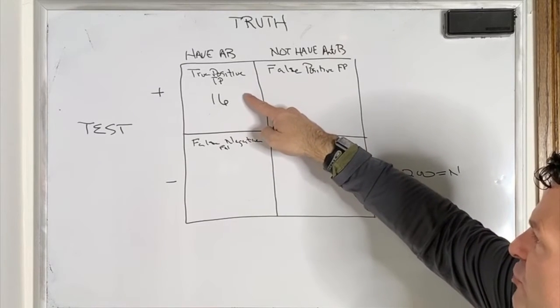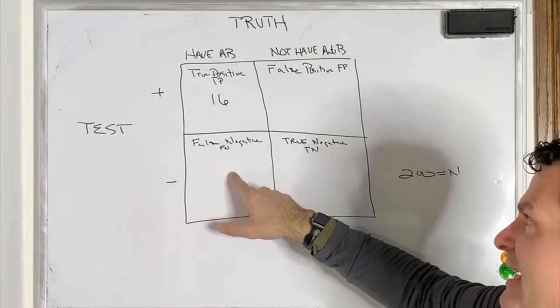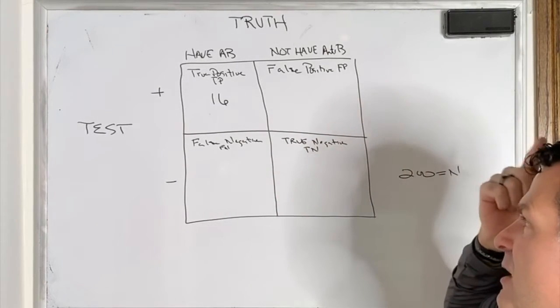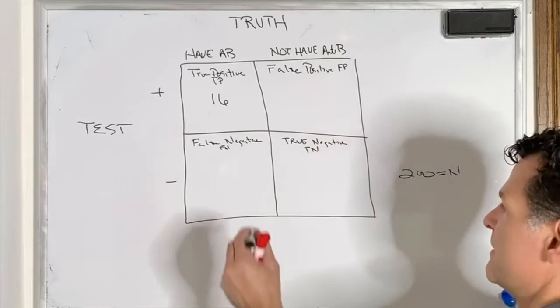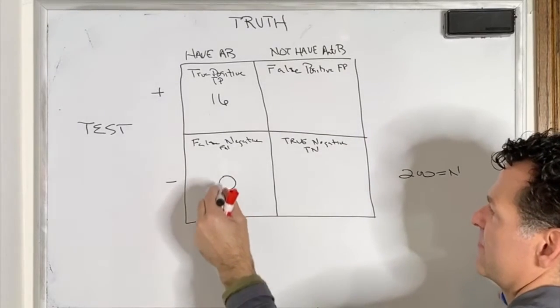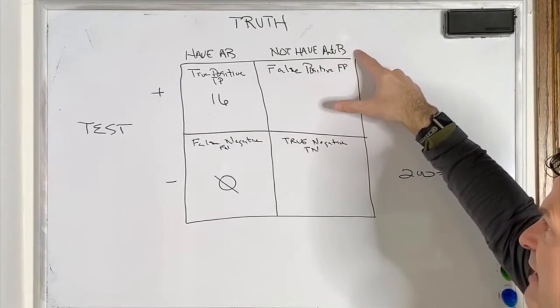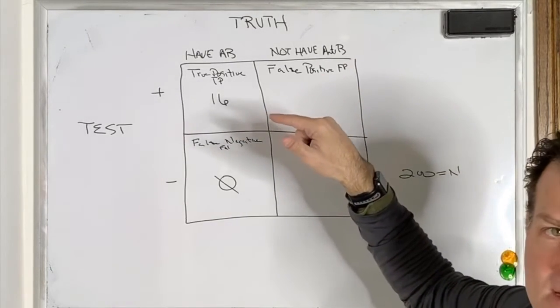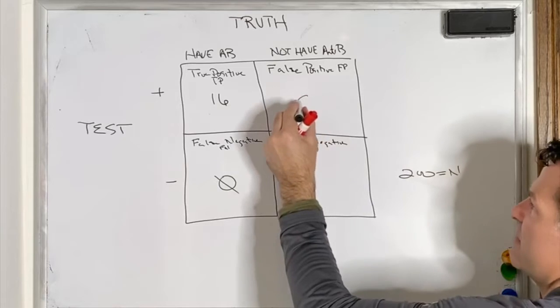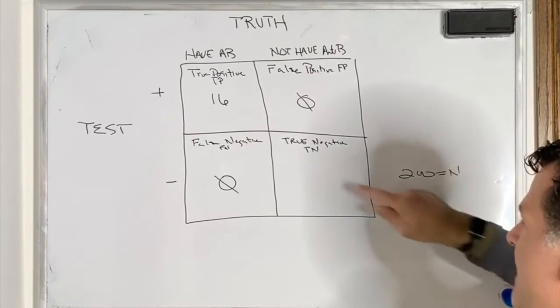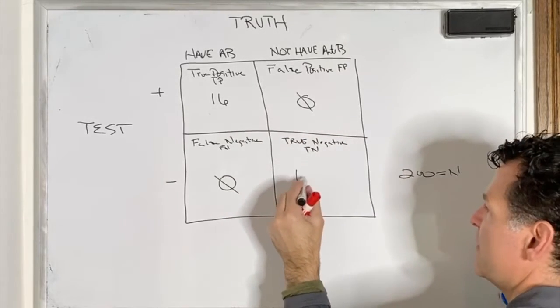If the true positive is 16, I should have zero false negatives, meaning that it shouldn't happen. This would be zero. In this column, I should not have anybody for a truly accurate test, 100% accuracy. I should not have any false positives. So this would be zero. And the true negative would be the 200 minus the 16, or 184.